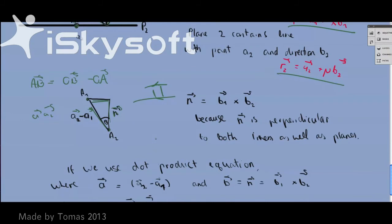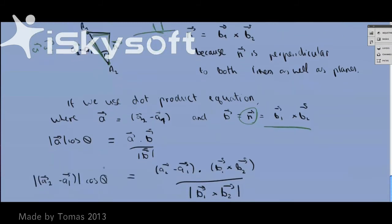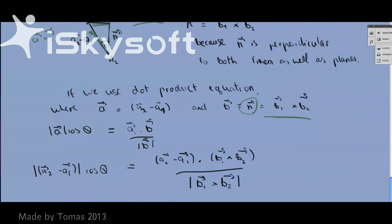So if we use the dot product equation, where A is this bit right here, and B is B₁ × B₂, which is the N, then we can just substitute this whole equation, so a·cos(θ) is (a·b)/|b|, and if we just substitute this and this in, that's the big equation we're supposed to use. I was a little bit fast, but I'm trying to be fast and not waste your time.